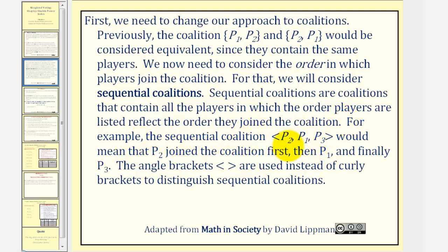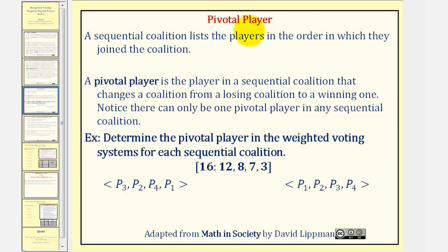For example, the sequential coalition containing player two, player one, and player three would mean player two joined the coalition first, player one joined second, and finally player three joined third. Angle brackets are used instead of curly brackets to distinguish sequential coalitions.